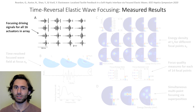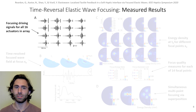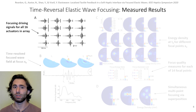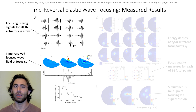We measured the impulse responses from our 16 actuators to 14 different focus locations using optical vibrometry, and used the same vibrometry method to image the surface of the medium during focusing. Applying the time reversal process produced a set of 16 driving signals for each of the measured foci. Driving our actuators with these signals yielded a wave field that reached a spatial maximum at focus location x0 at t equals t0 and then quickly decayed.